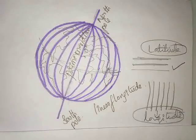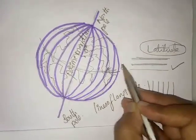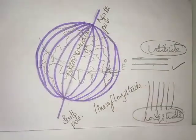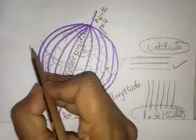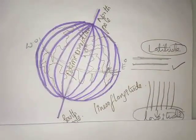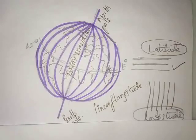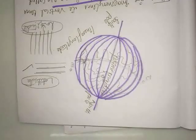The prime meridian divides the earth into the eastern hemisphere and the western hemisphere. The meridians to the east are marked with zero degrees East, and those on the west are marked with zero degrees West.